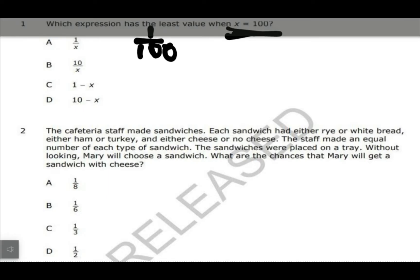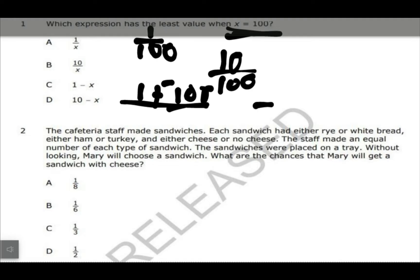So the first one would end up being 1 over 100. For b, the second one would be 10 over 100. For c, I would do 1 minus 100. Remember, I do add the opposite for this one. This is going to end up being a negative 99, and then for d, I do 10 minus 100.